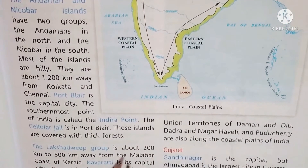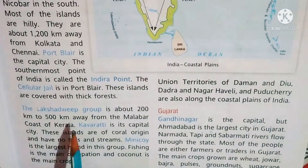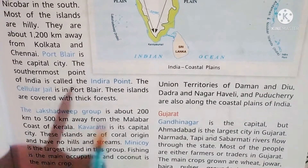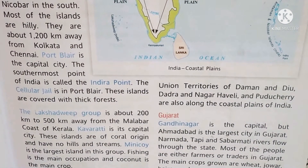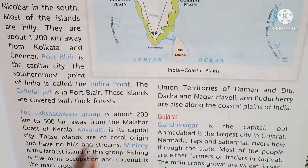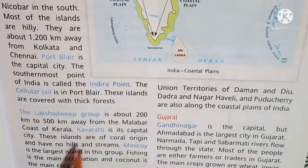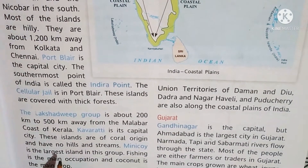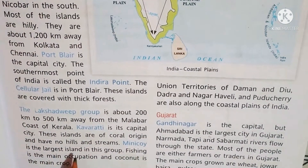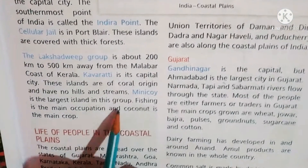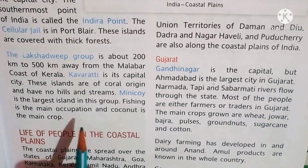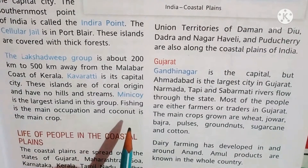The Lakshadweep group is about 200 to 500 km away from the Malabar Coast of Kerala. Kavaratti is the capital of Lakshadweep. These islands are of coral origin and have no hills or streams. Minicoy is the largest island. Fishing is the main occupation, and coconut is the main crop.